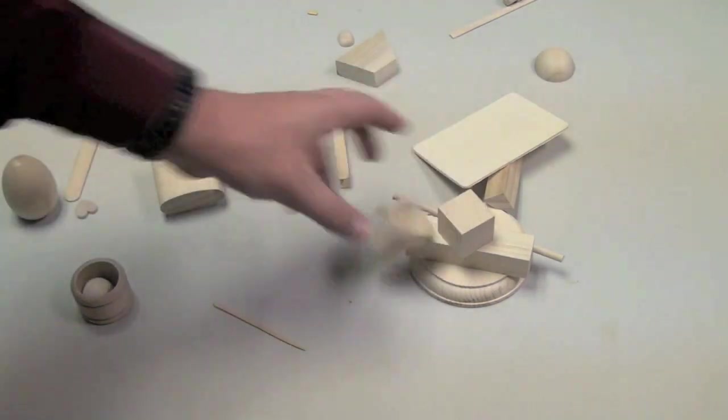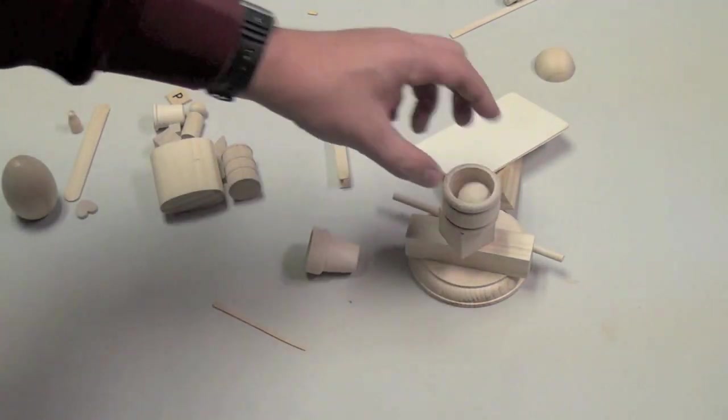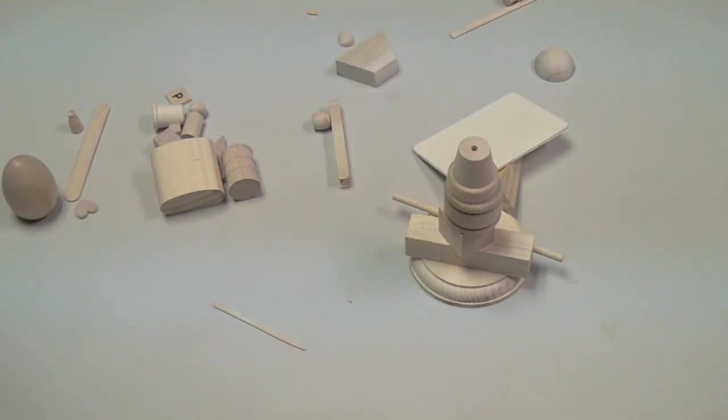If when you're putting a piece on, your piece falls off, that's fine. You can just pick it up and put it back on again, but if you knock other pieces off, well, then you lose, and that's the way the game goes.